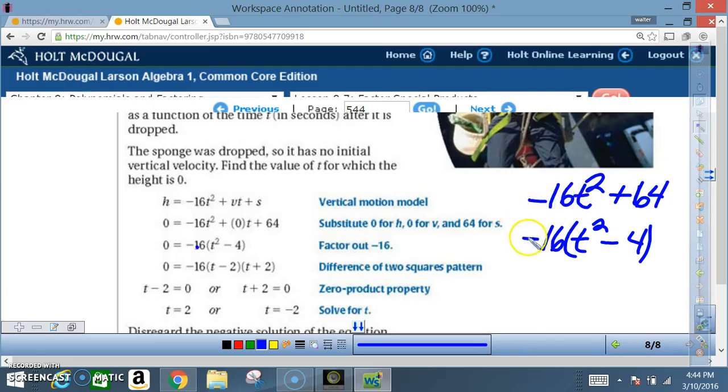So when you write the negative 16 on the outside, you end up saying negative 16 divided by negative 16. That's going to be a positive 1. So all you're left with is t squared. Then you say 64 divided by negative 16. That's going to end up being negative 4. So now you have the difference of two perfect squares. And now you apply the same technique we've been doing this entire lesson.